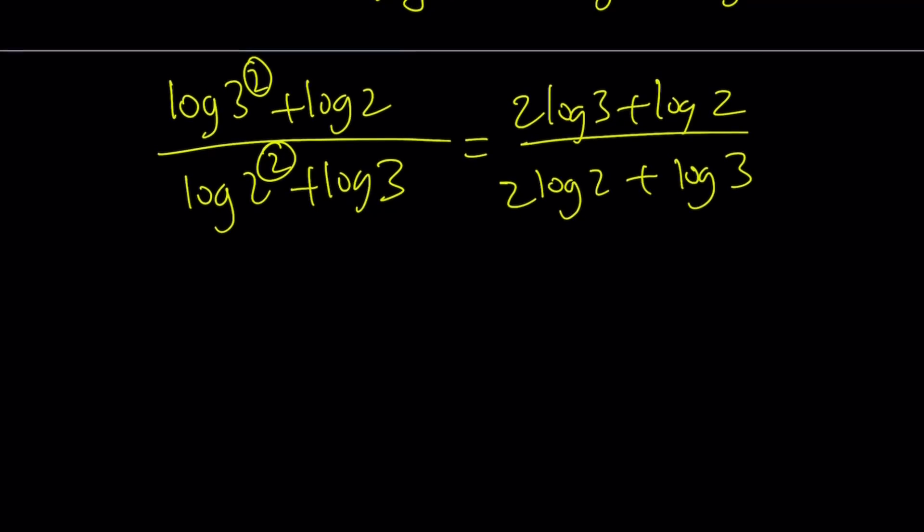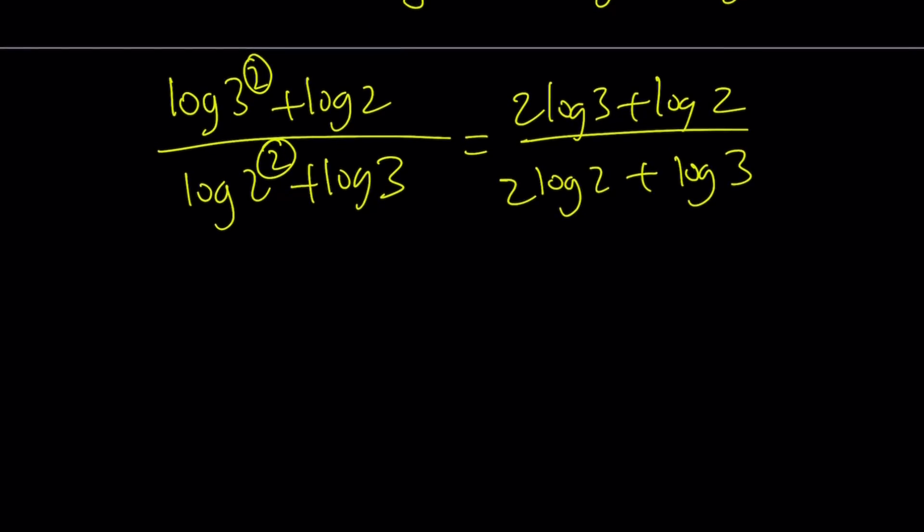And that gives us 2 log 3 plus log 2 divided by 2 log 2 plus log 3. See how convenient it is without saying the base. And then we're going to have to, well, this is equal to x, right? So let's go ahead and distribute.